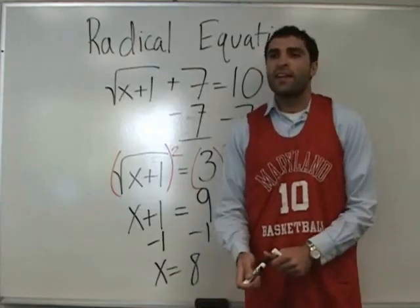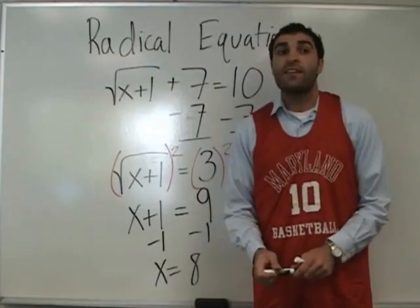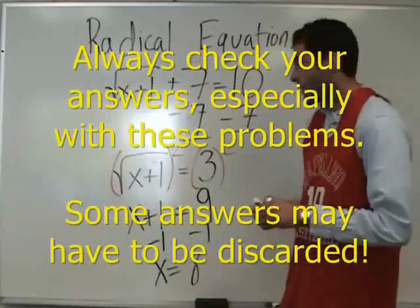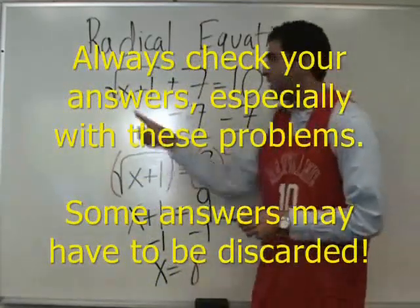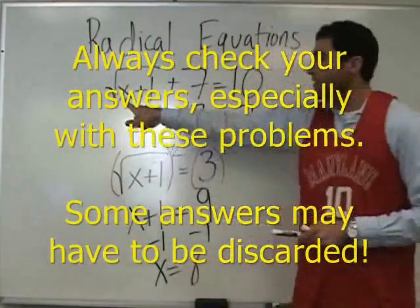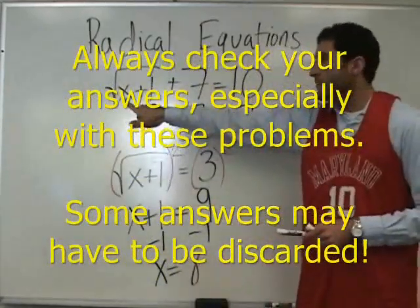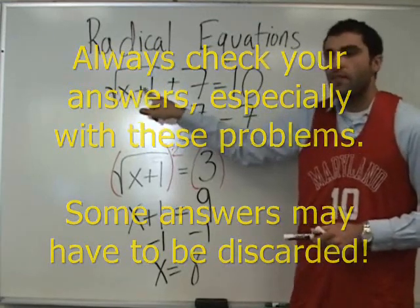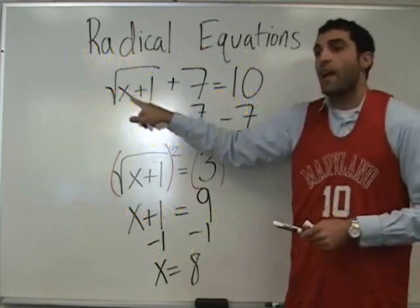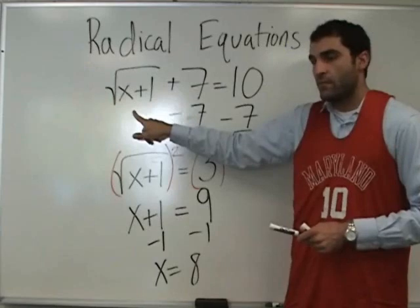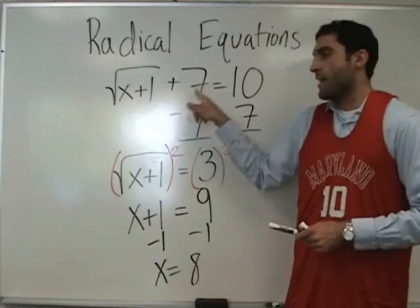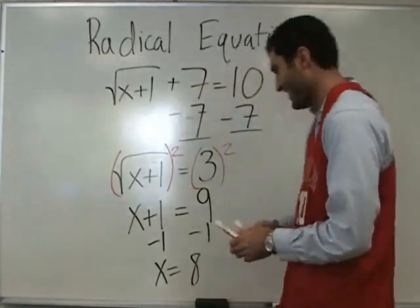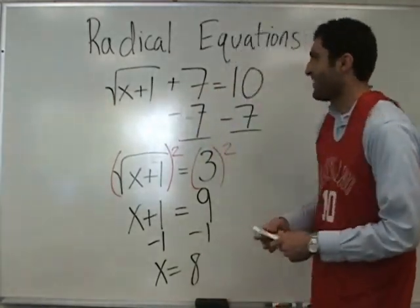Here's the thing we have to start keeping in mind now — always check your answers with these because some of them will not work. So let's plug in 8 plus 1. What's the square root of 8 plus 1? Square root of 9, which is 3. 3 plus 7 — so it works.